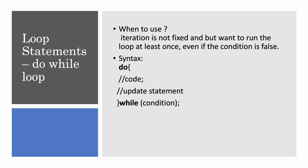Next is the do-while loop. The difference is that when the iteration is not fixed but you want to run the loop at least once — even if the condition is false — you use do-while. It will first execute once, then update the statement, and continue until the condition becomes false.